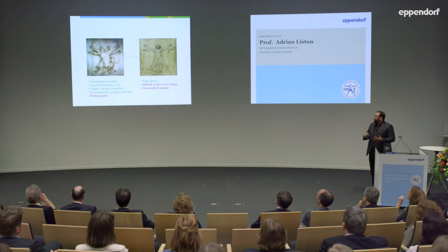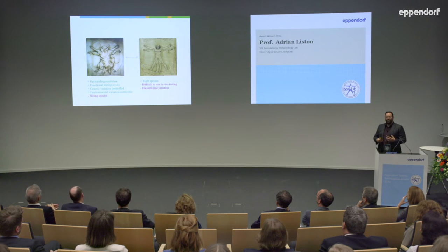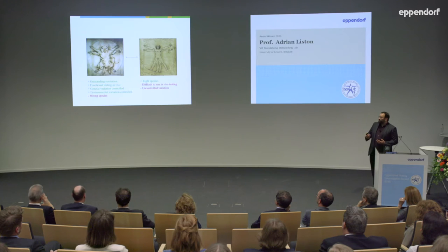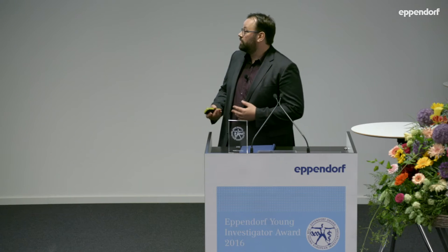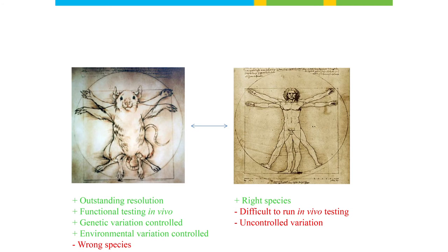My lab works on both mice and humans, and there are real advantages and disadvantages to both. Mice have been essential for immunology — they give us outstanding resolution, we can do functional in vivo testing, and we can control genetic and environmental variation. But ultimately they are the wrong species. We would like to start curing diseases in humans. Humans have the advantage that we're working on the right species, but there are difficulties with in vivo testing and uncontrolled variation — when you're used to nice tight error bars in mice, humans are just a mess.